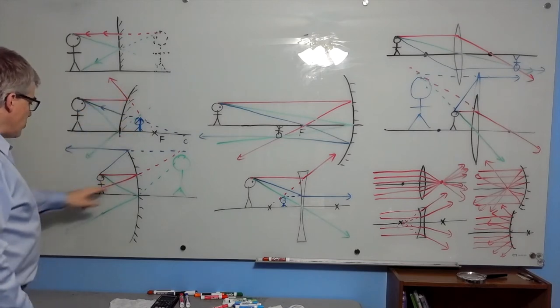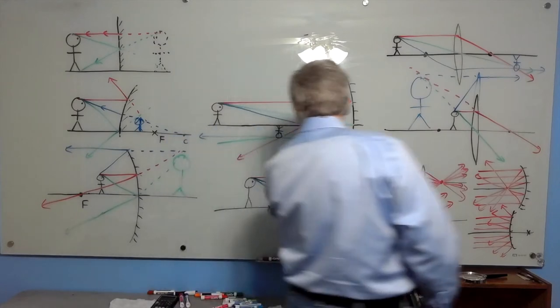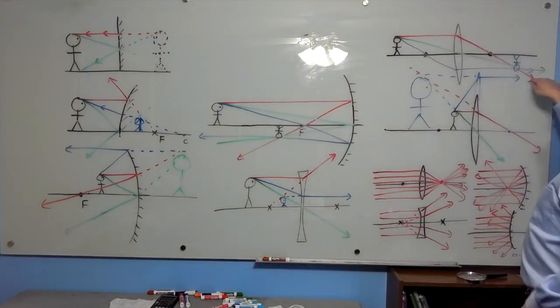Scatter off a shiny ball, go through the focal point, scatter away from the focal point for that diverging lens, go through the focal point.